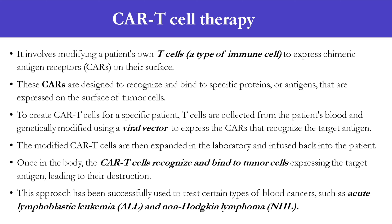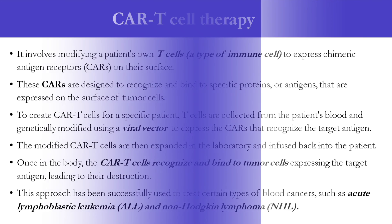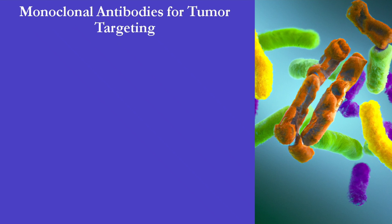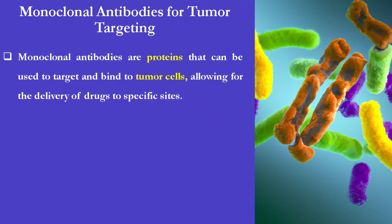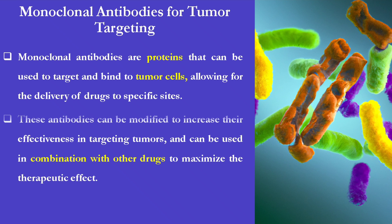This approach has been successfully used to treat certain types of blood cancers such as acute lymphoblastic leukemia (ALL) and non-Hodgkin lymphoma (NHL). The next strategy is monoclonal antibodies for tumor targeting. Monoclonal antibodies are proteins that can be used to target and bind to tumor cells, allowing for the delivery of drugs to specific sites. These antibodies can be modified to increase their effectiveness in targeting tumors and can be used in combination with other drugs to maximize the therapeutic effect.